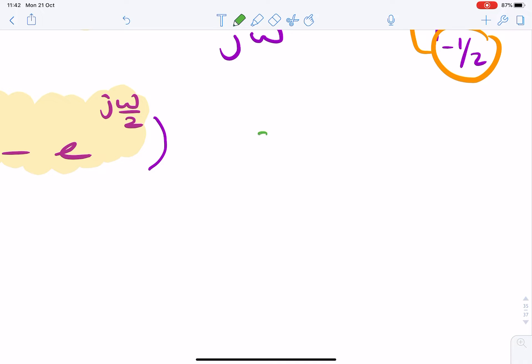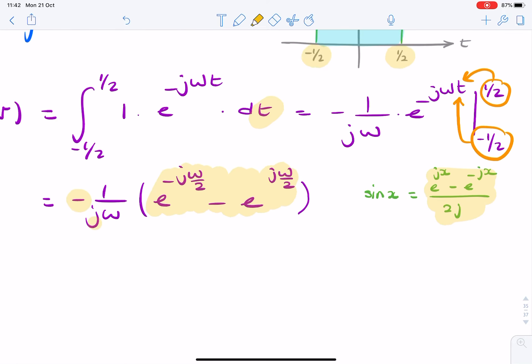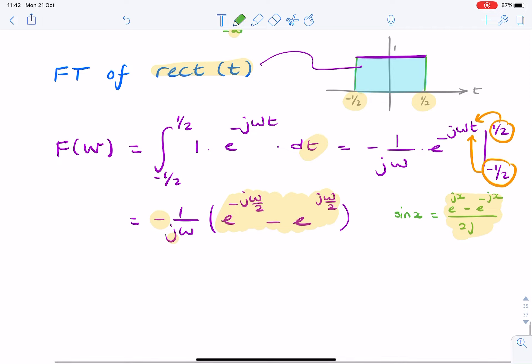Let me remind you what sine looks like. Sine x can be written as e to the jx minus e to the minus jx over two j. And if you look carefully, that is almost the same as that.